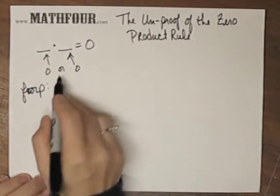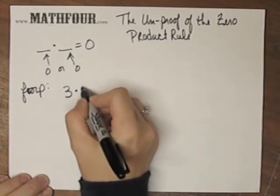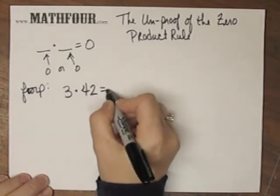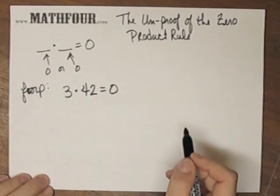So let's suppose that they're both non-zero. Say, just for fun, we have 3 times 42 is zero.